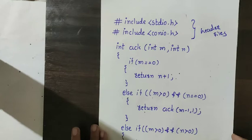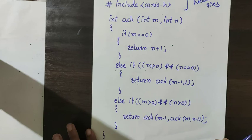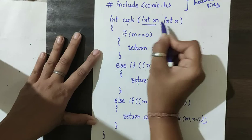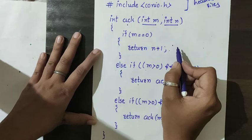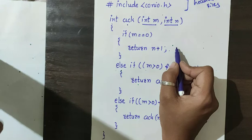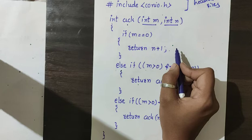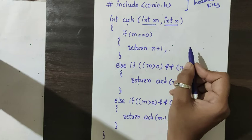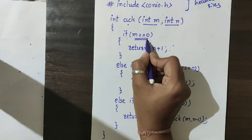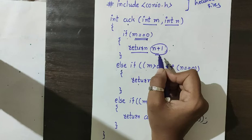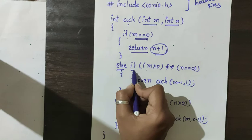Now focusing on the Ackermann function itself: it is simple — I just apply the formula using an if-else ladder. The function is declared as integer ACK with integer m and n as formal parameters. Since there are 3 conditions, I write if-else if-else if. I always write the base condition first: if m equals 0, return n plus 1.